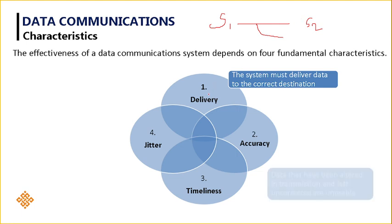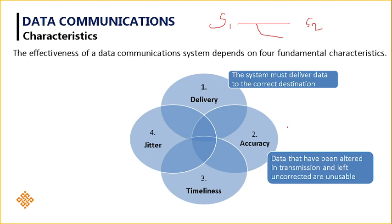Next comes accuracy. Data that has been altered in transmission and not corrected is unusable. Whatever data you are transmitting, if it is altered by an attacker and not corrected, then the data received by the receiver is of no use. The data that the sender sends should be received correctly by the receiver — data integrity has to be maintained. You should not leak the data, as an attacker can easily modify it and use it for his own purpose. Whatever data the sender is sending, the same data must be received at the receiver side.